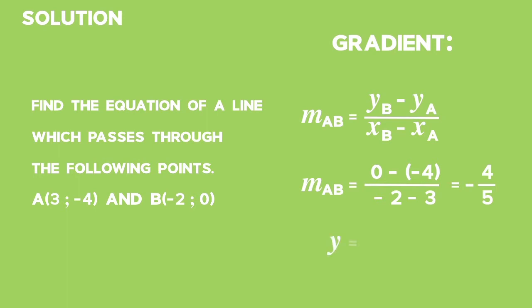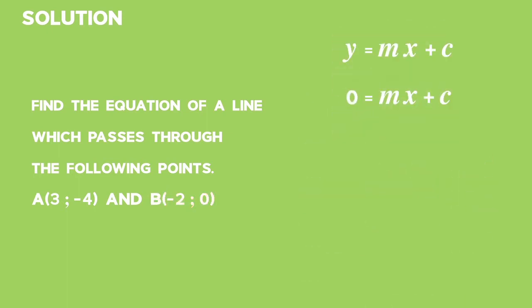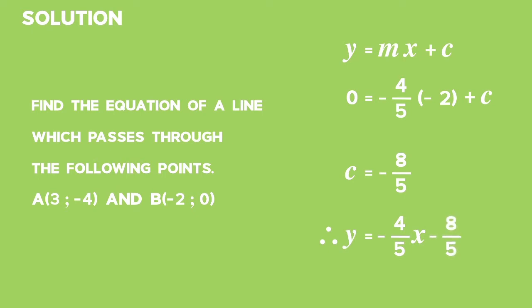We use the formula y equals mx plus c to find c, the y-intercept. Choosing point B (negative 2, 0), we substitute y with 0, x with negative 2, and m with negative 4 over 5. We get 0 equals 8 over 5 plus c. Solving for c, we get c equals negative 8 over 5. Therefore, the equation of line AB is y equals negative 4 over 5 times x minus 8 over 5.